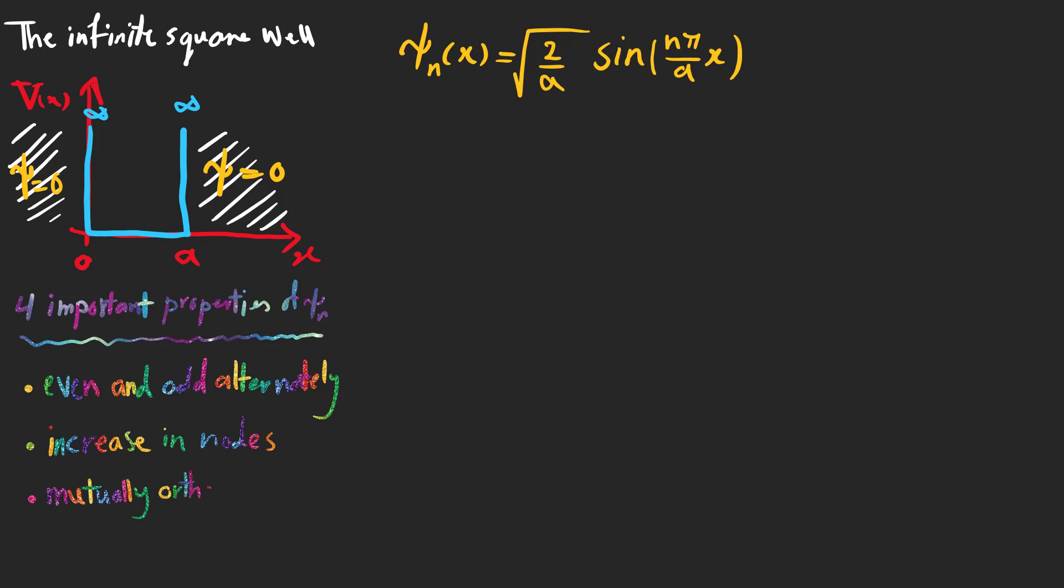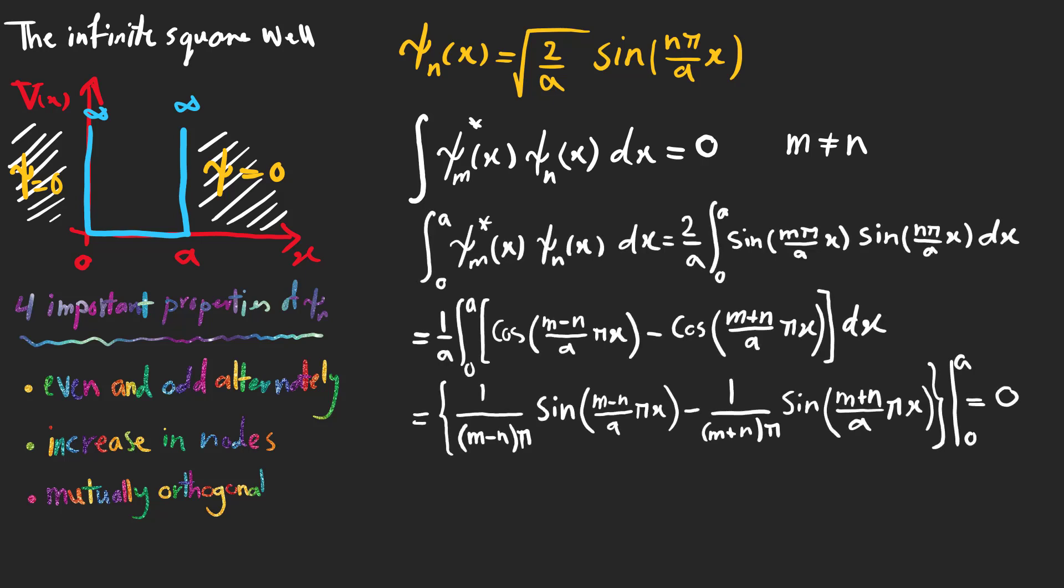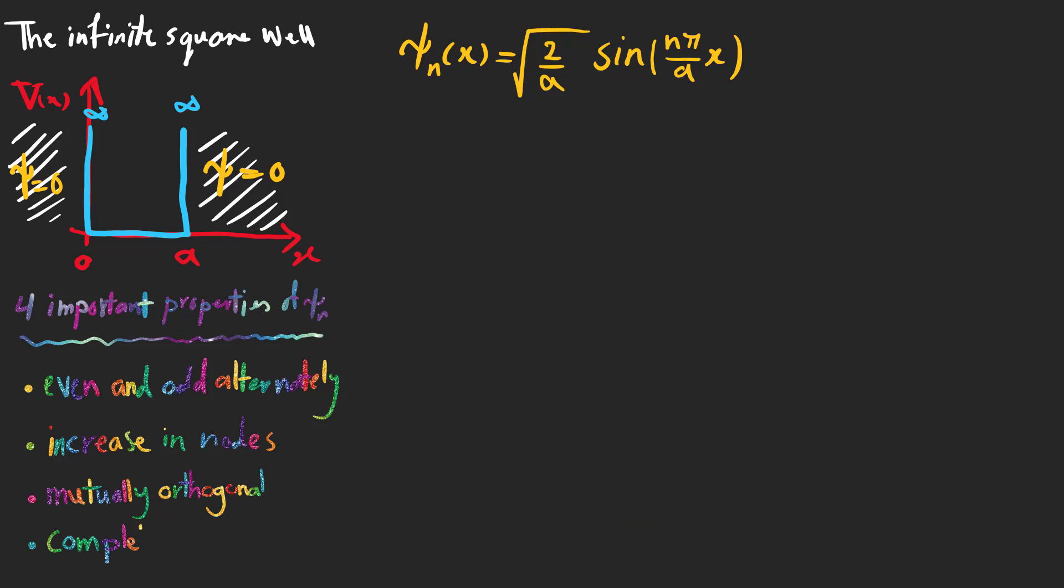The third property is the orthogonality between each two states which is expressed by this integral. And this is the proof. So pause the video if you like and take a look at it. So if m is not equal to n the integral is 0, and if m is equal to n we have the normalization condition and the integral would be 1.